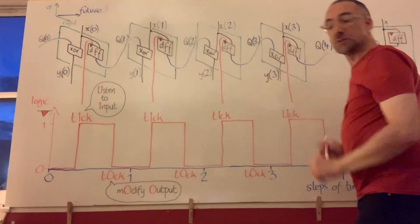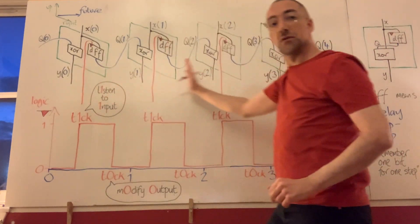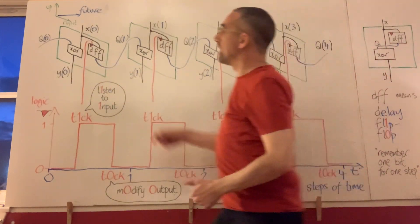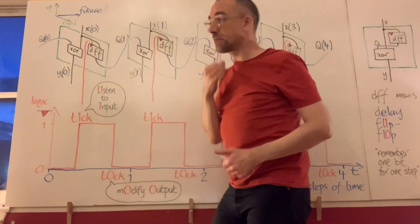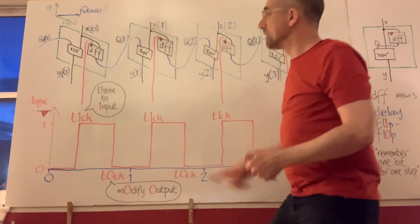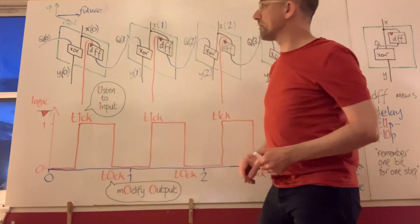So time is marching from left to right as inputs flow in at the top and outputs flow out at the bottom. And here's our D flip-flop.